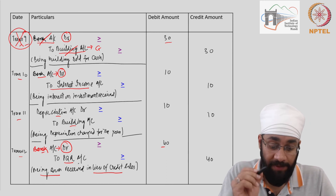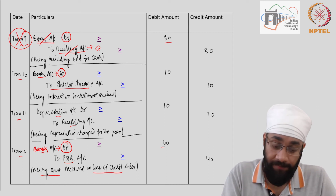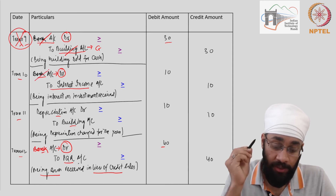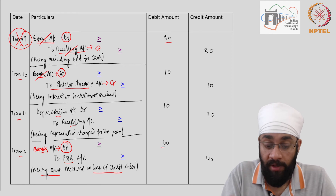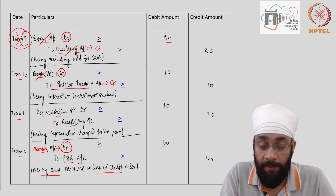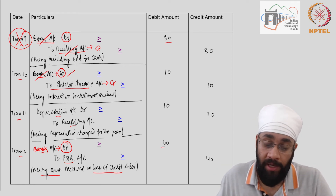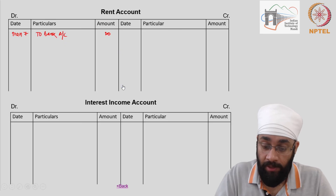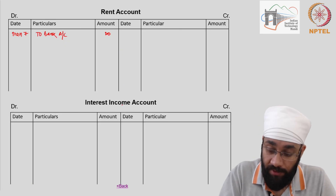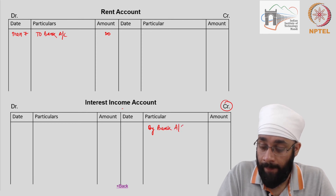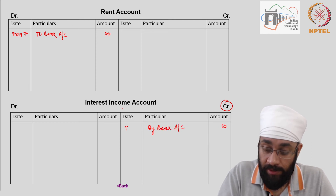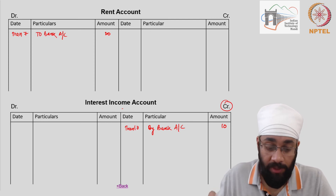Transaction 10: Bank account is already taken care of. Interest income account is being credited. I go to the credit side of interest income account and write 'By Bank Account, 10'. Here is interest income account, credit side — 'By Bank Account, 10' — transaction 10. Done. Transaction 10 posted in both accounts.